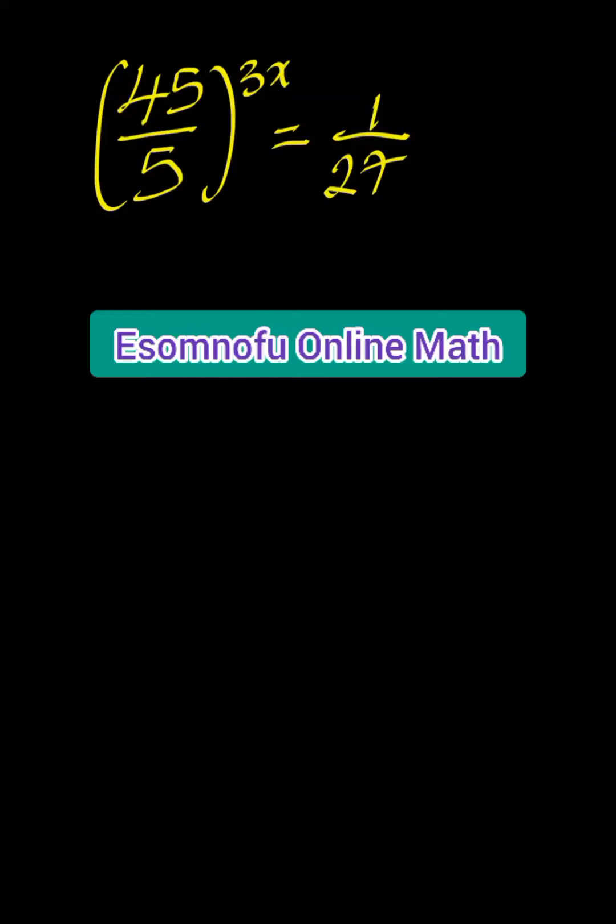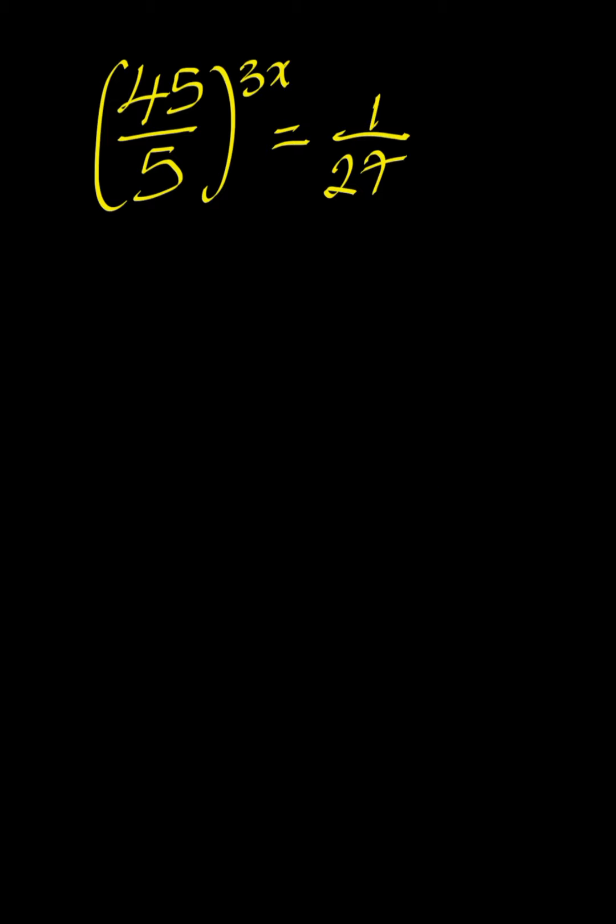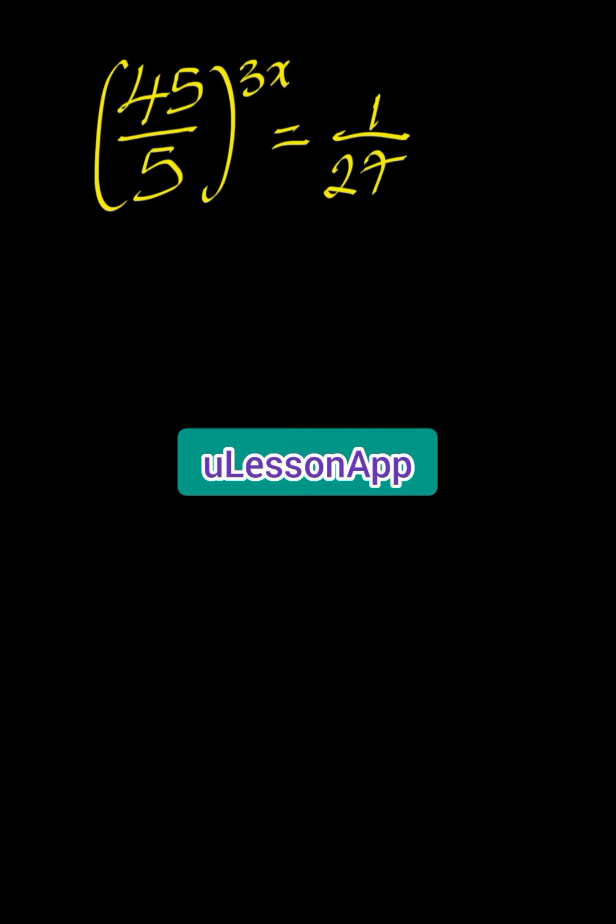Hello friends, welcome once again to ASOM North Online Maths. In this video, we shall solve this problem before us. Do not forget that this video is proudly powered by your lesson app. So we have 45 over 5, all to the power of 3x is equal to 1 over 27.